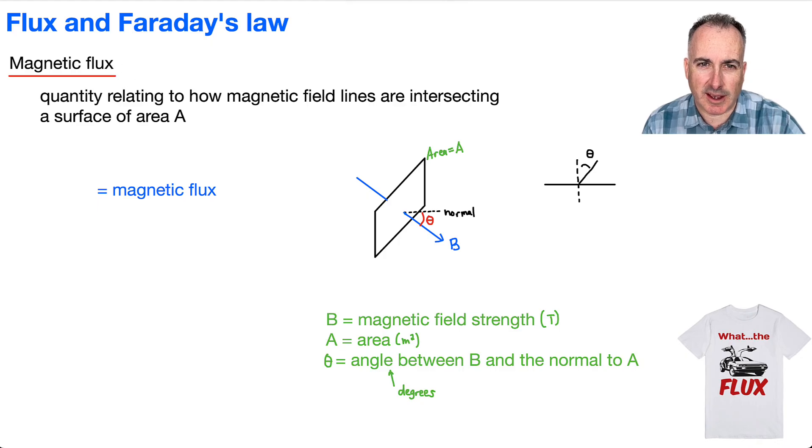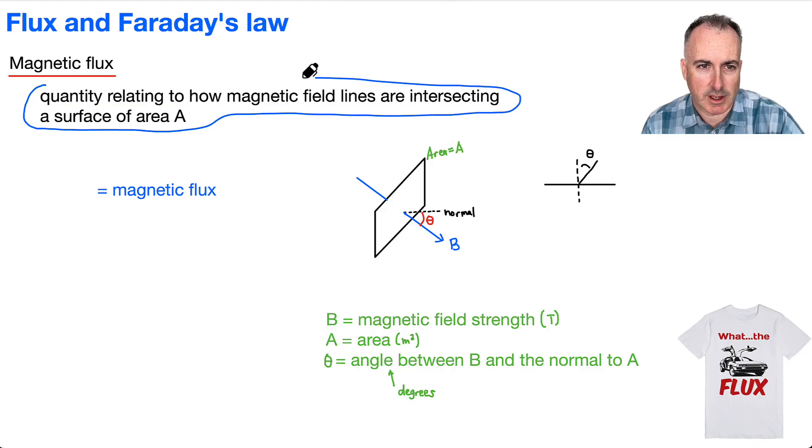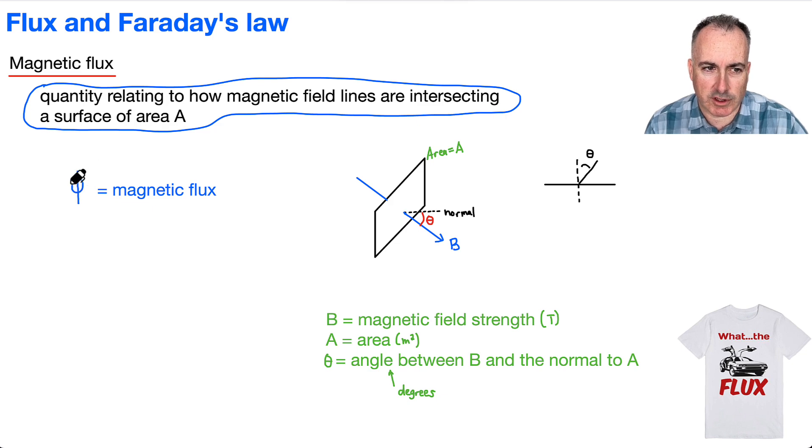And it's a weird thing, because magnetic flux itself isn't really so important, but it's what we do with it that's going to be important. So it's relating to how magnetic field lines are intersecting a surface area. But I'm just going to first define this letter. So first of all, we use this Greek letter phi for magnetic flux. That's what we're going to be looking at.